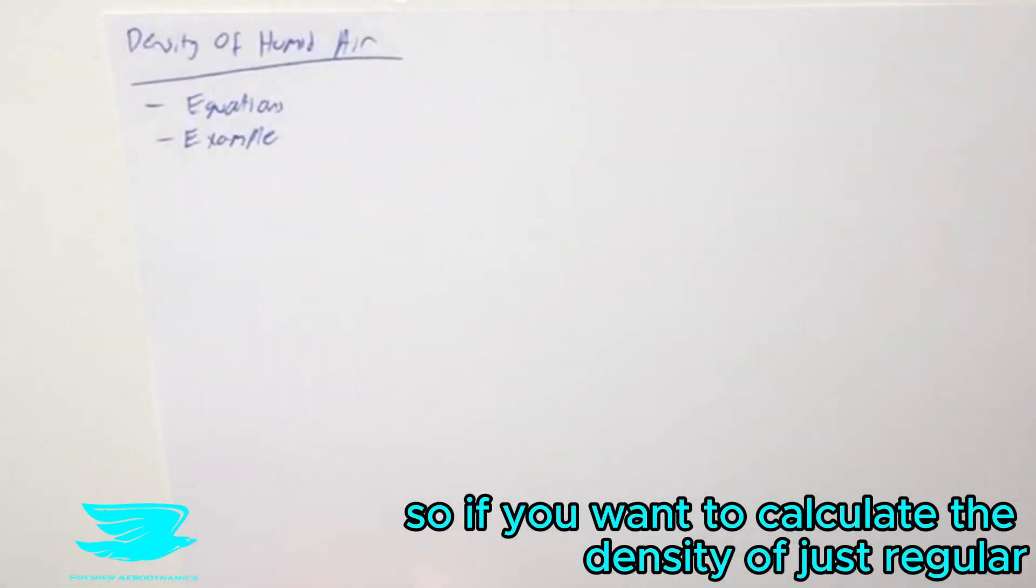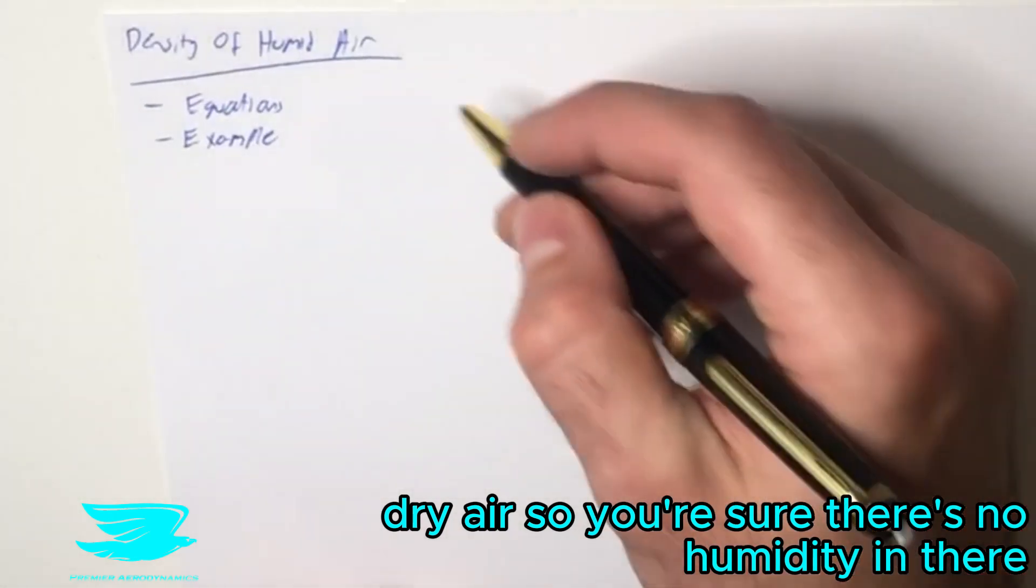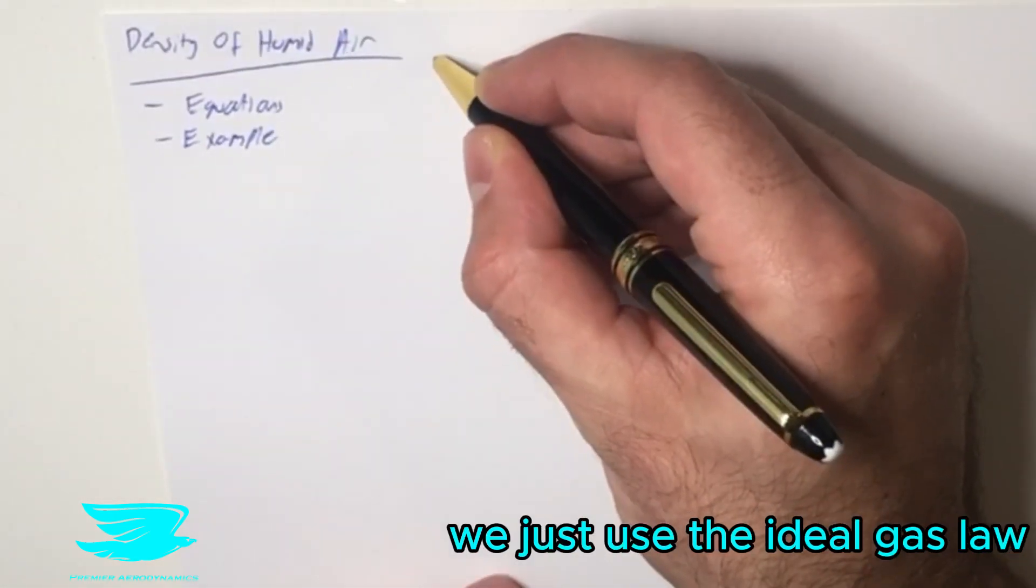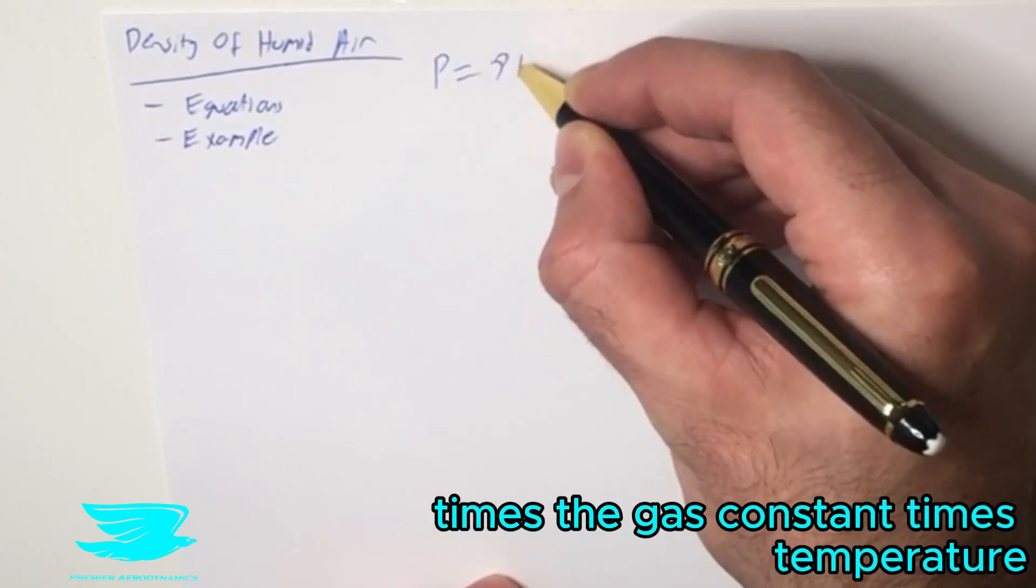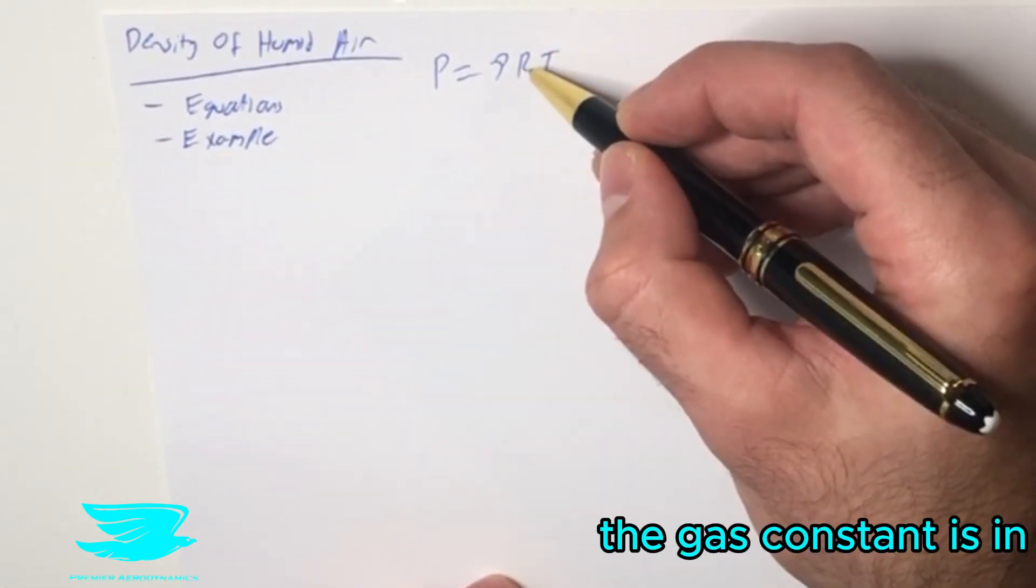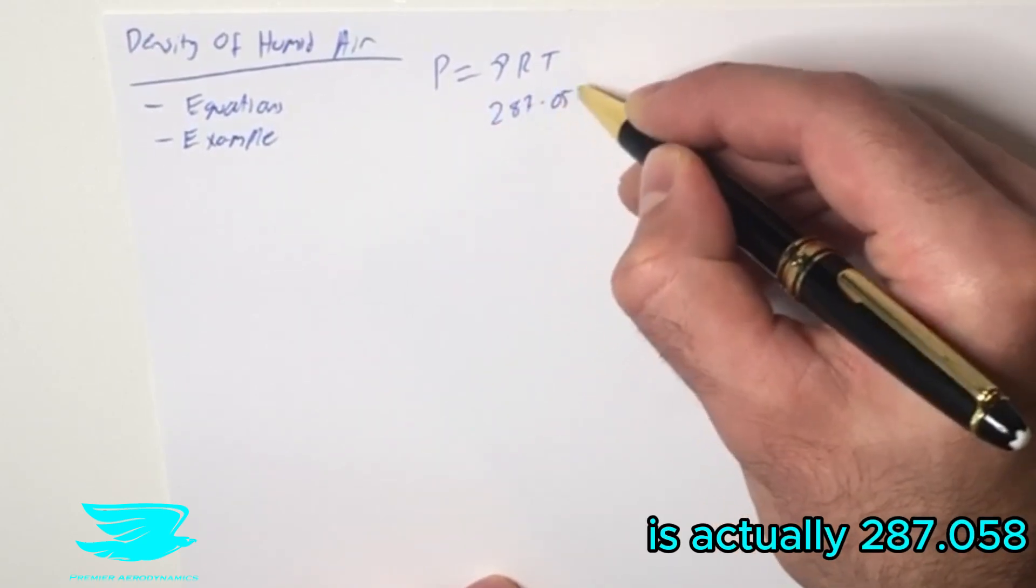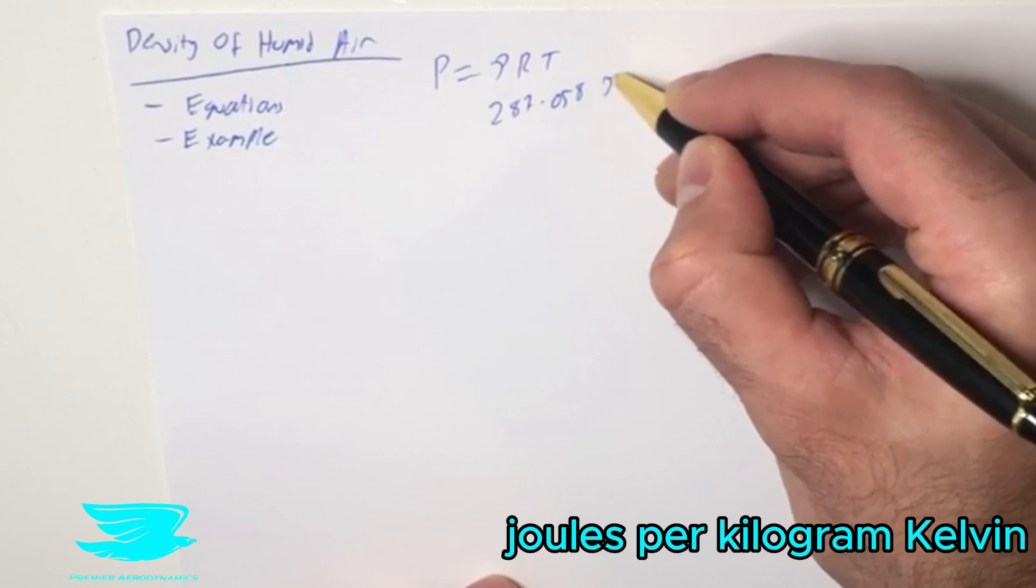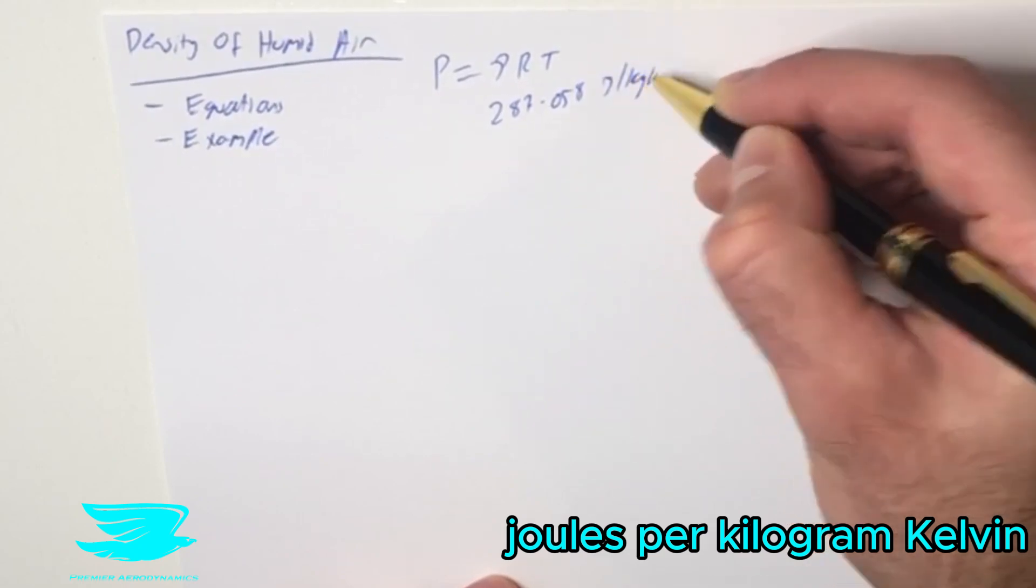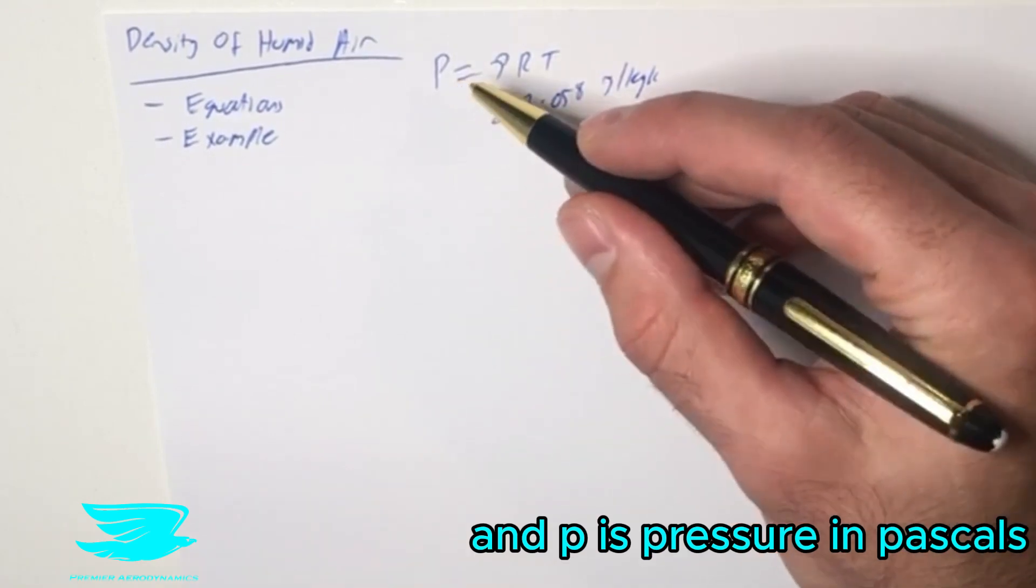If you want to calculate the density of just regular dry air, assuming there's no humidity, it's actually quite easy. We just use the ideal gas law, where pressure equals the density times the gas constant times T, where T is in Kelvin. The gas constant is 287.058 joules per kilogram Kelvin, rho is density in kilograms per meter cube, and P is pressure in pascals.